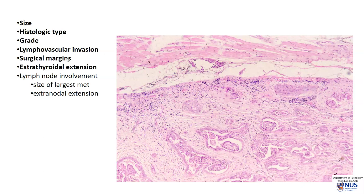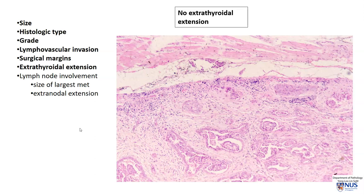The next thing we want to look at is whether there is extra-thyroidal extension. Sometimes when the surgeon has difficulty clearing the tumor, he will also excise a little cuff of the adjacent skeletal muscle or soft tissues. And in this instance, when we examine this microscopically, here is the skeletal muscle. There is no tumor involving the skeletal muscle, so there is no extra-thyroidal extension.